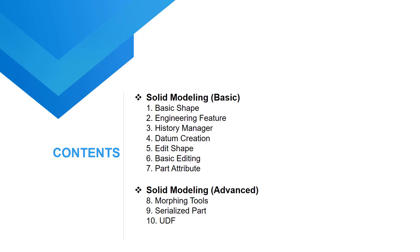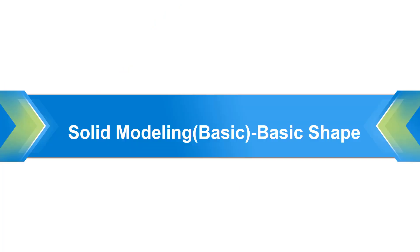These are all the contents I will cover in this lesson. In general, there will be two big parts: Solid Modeling Basic and Solid Modeling Advanced, with a total of 10 chapters. In this video, we will talk about the first chapter, Basic Shape, in which I will show you how to create basic shapes by extrude, revolve, sweep, and loft features.